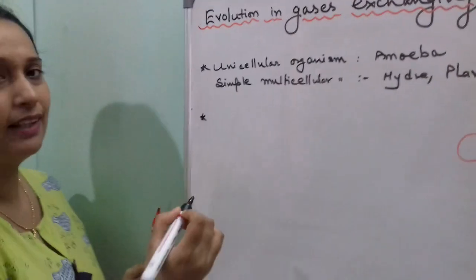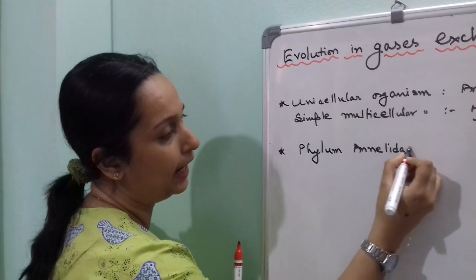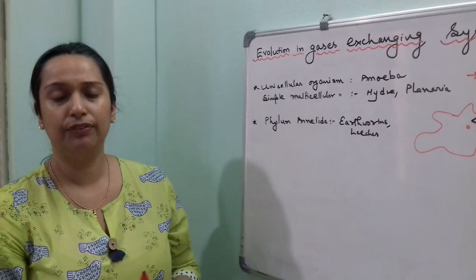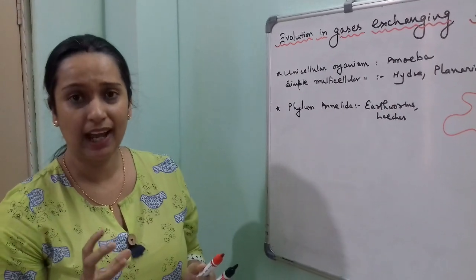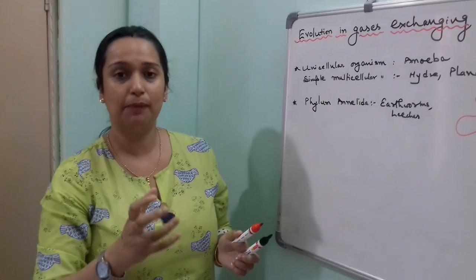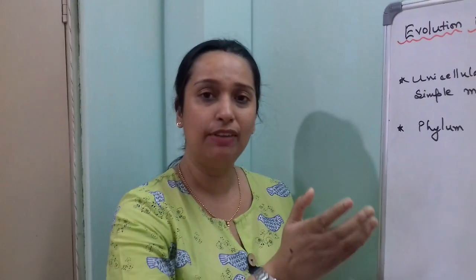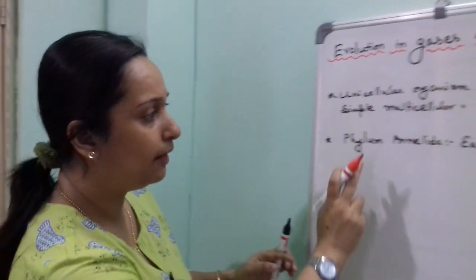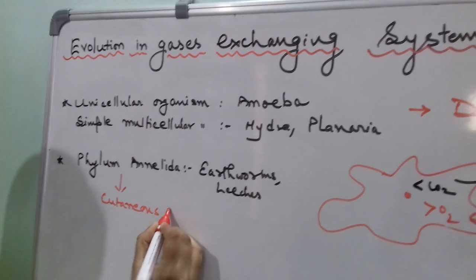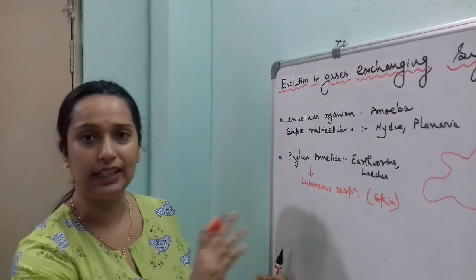In phylum Annelida, organisms like earthworms and leeches have a thin, moist skin with a rich supply of blood. Oxygen moves into their body through the skin and is absorbed by the blood, then moves to the cells. CO2 produced in the cells travels through the blood and diffuses out of the body through the skin. This is called cutaneous respiration — respiration that occurs through the skin.